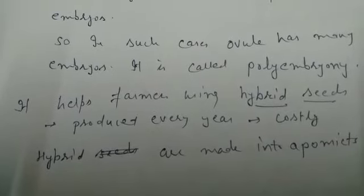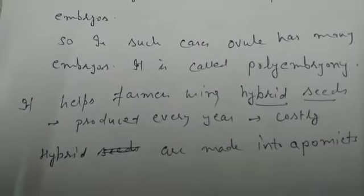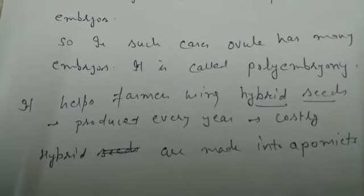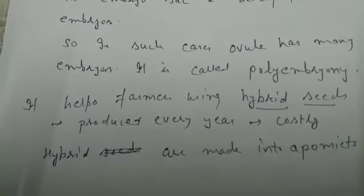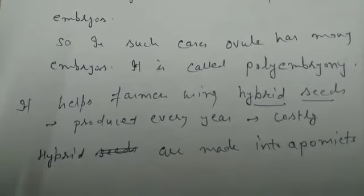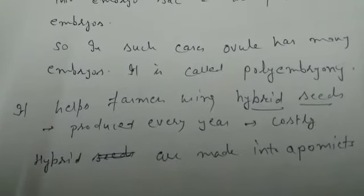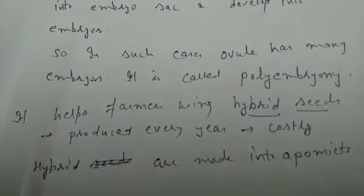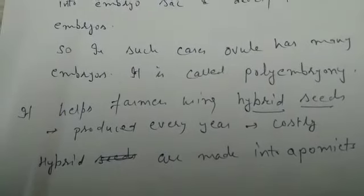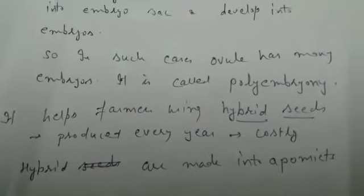If these hybrids are made into apomictics — meaning if we can introduce genes into hybrid varieties so that they start producing apomictic seeds — then these problems are solved. This is all about apomixis, apomictic seeds, and polyembryony. Thanks and have a nice day.